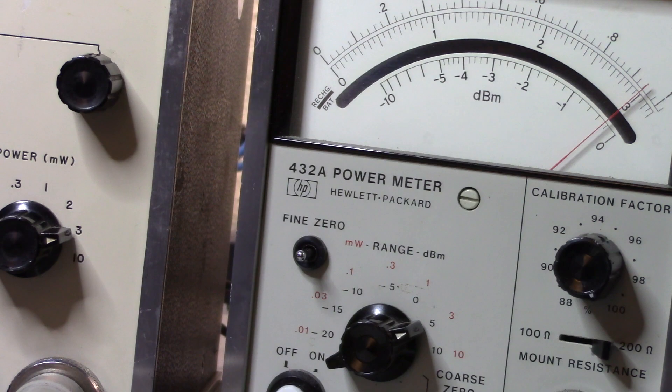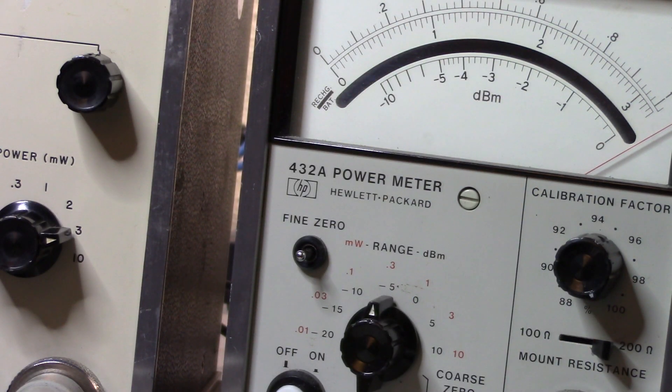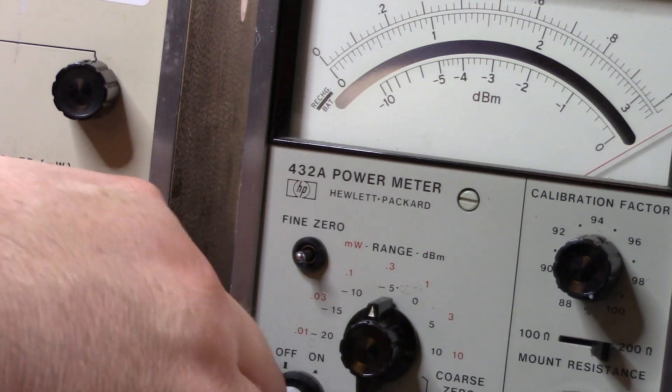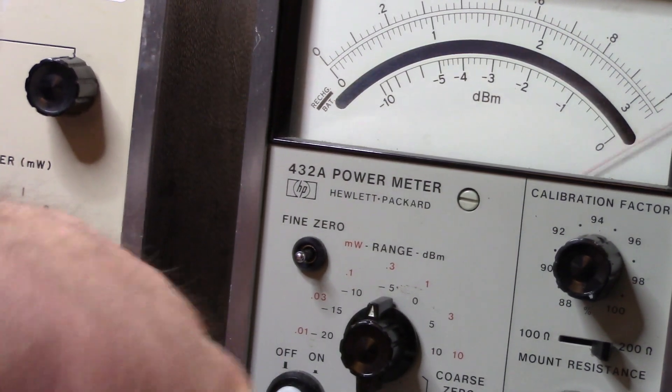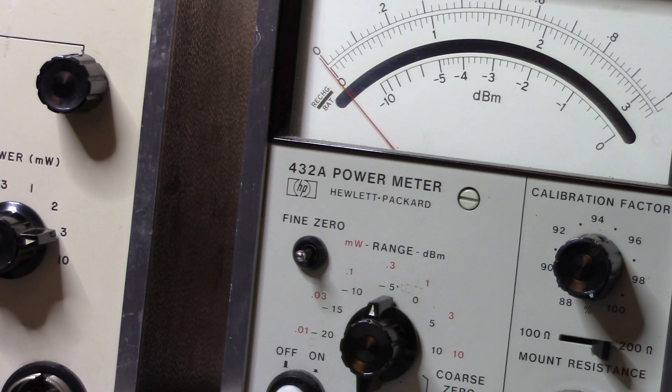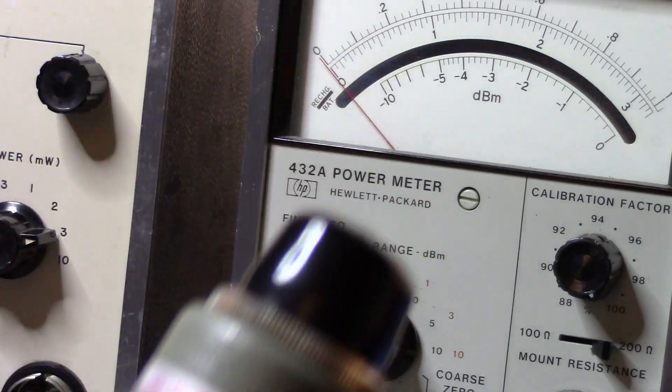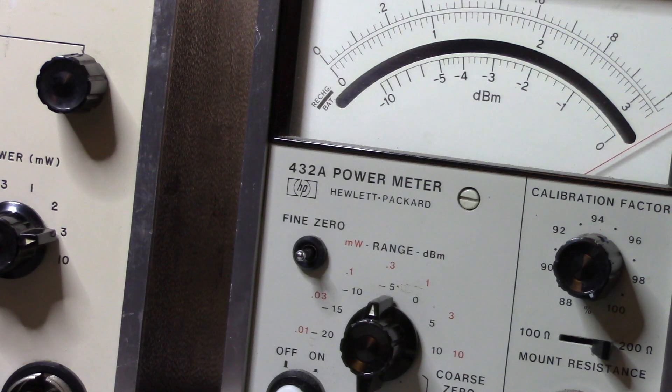Find zero, set the 432 to 0.3 milliwatts, and then I'm supposed to connect the thermistor mount. Let's disconnect this guy here. This is my thermistor mount that I've just gotten back from Keysight. This one's an H76, so the actual frequency range on this only goes up to one gigahertz.